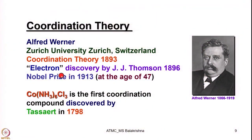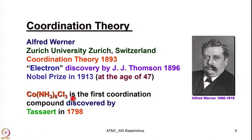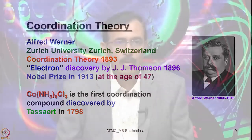For his painstaking work, he was awarded the Nobel Prize in 1913 at the age of 47. Hexamine cobalt(3) chloride is the first coordination compound, discovered by Tassault in 1798. Werner clearly distinguished between coordination compounds and double salts.